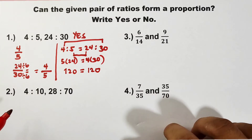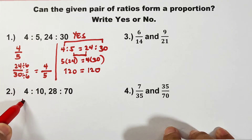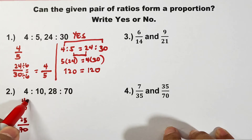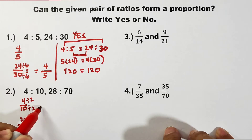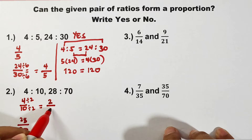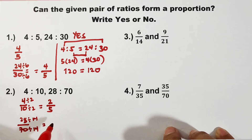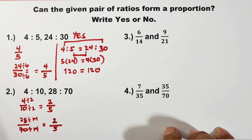For number 2, let's simplify 4 over 10 and 28 over 70. For 4 over 10, the GCF is 2, so divided by 2: we get 2 over 5. For 28 over 70, the GCF is 14, so divided by 14: 28 divided by 14 is 2, and 70 divided by 14 is 5. Both simplify to 2 over 5 — yes, these two ratios are forming a proportion.